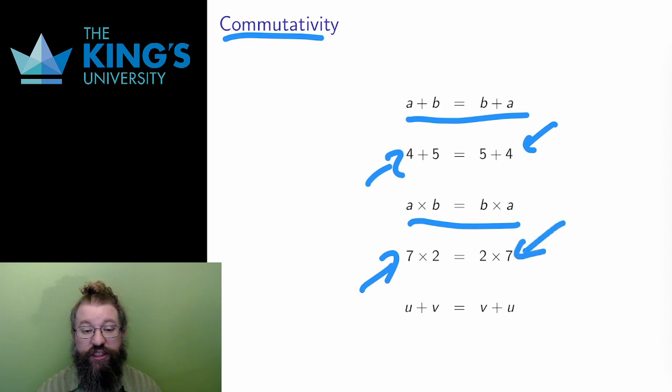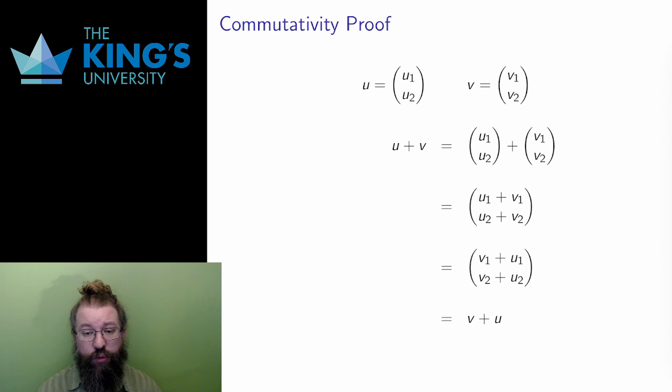This rule sits so far in the background that you probably rarely even consider it when multiplying numbers, but not all operations in mathematics work this way. Happily, the addition of vectors is commutative. For any vectors u and v, u plus v is the same as v plus u. What is the proof of this? I need to prove in general, and I can't just draw the diagram from the previous video that showed an example that works. I need a general argument.